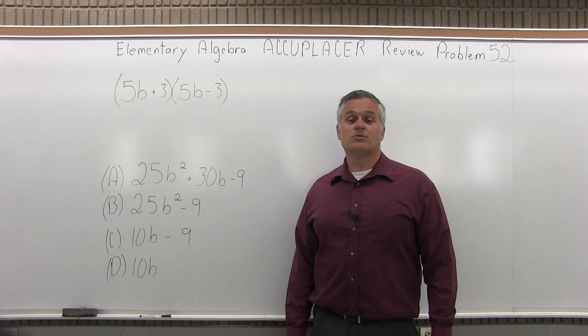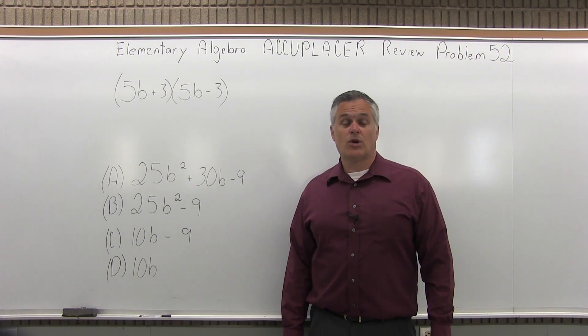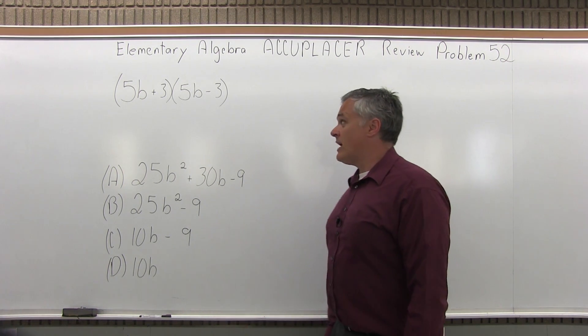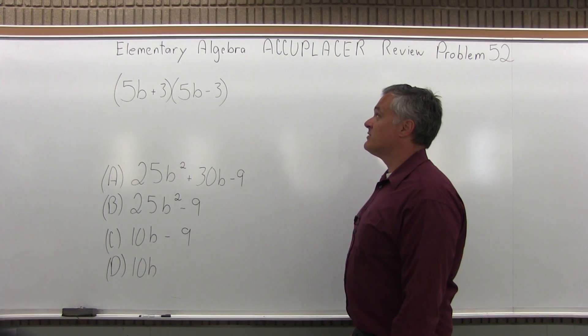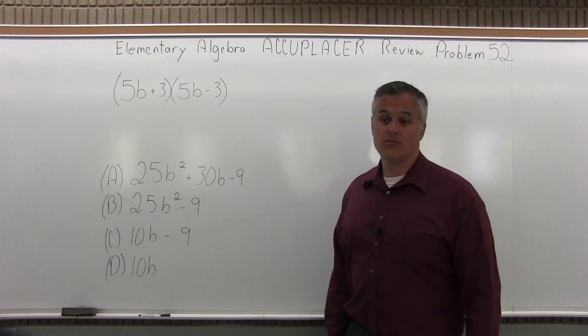This is the Elementary Algebra Accuplacer Review, Problem number 52. We have (5B+3) times (5B-3).